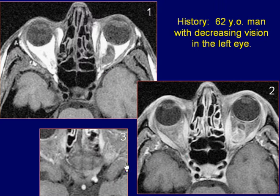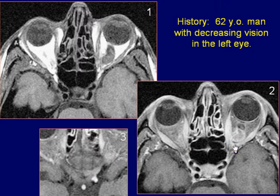Axial post-GAD fat saturation T1-weighted images of the orbit demonstrate the left optic nerve mass lesion as a heterogeneously enhancing area with posterior extension to the left side of the optic chiasm.